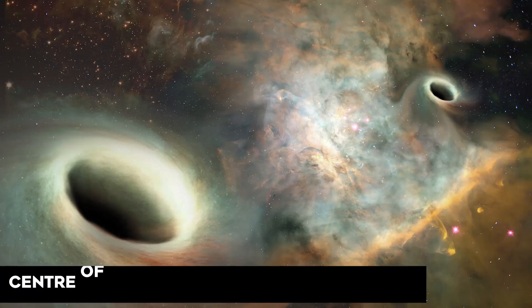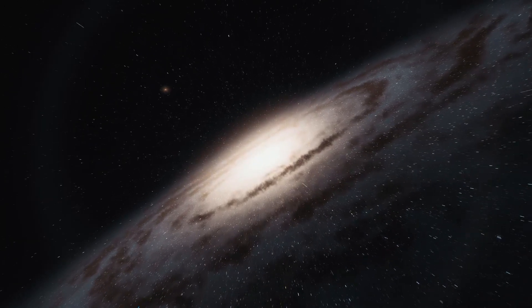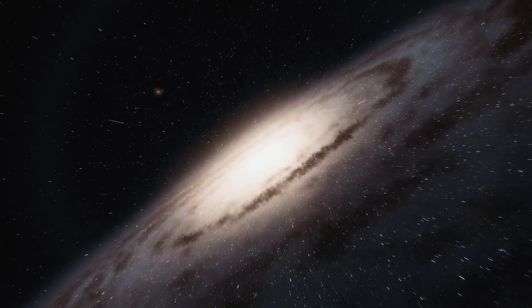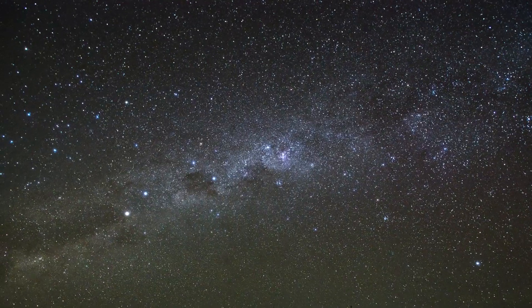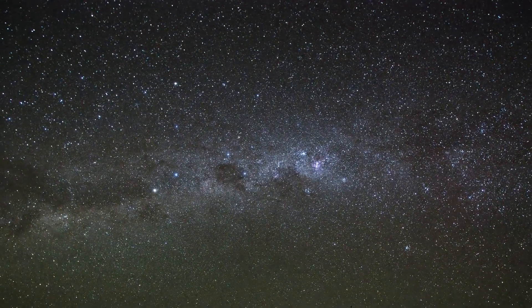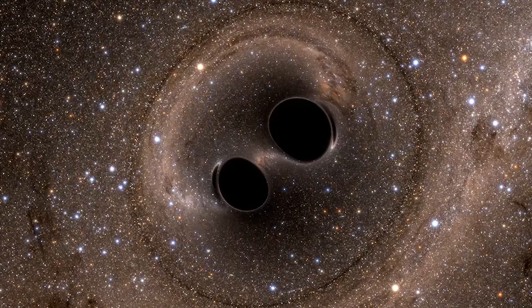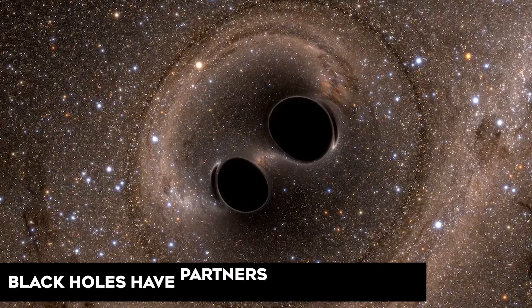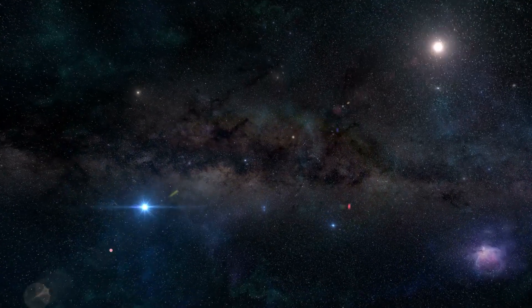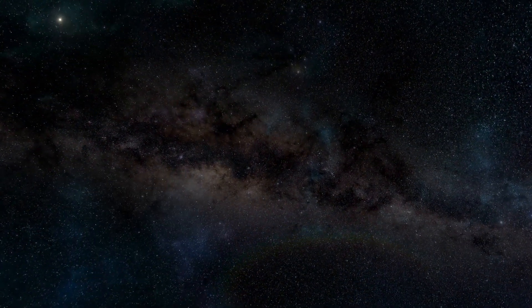Supermassive black holes are found at the center of every galaxy, including our own Milky Way, with masses ranging from millions to billions of times that of the Sun. Astronomers are currently investigating why supermassive black holes commonly exist in the centers of galaxies. One commonly accepted notion is the possibility that supermassive black holes have companions. If the supermassive black hole has a companion orbiting nearby, then the galactic nucleus is dancing a tricky dance.